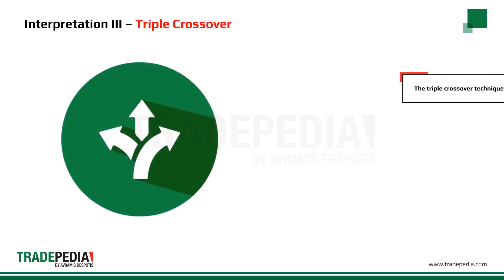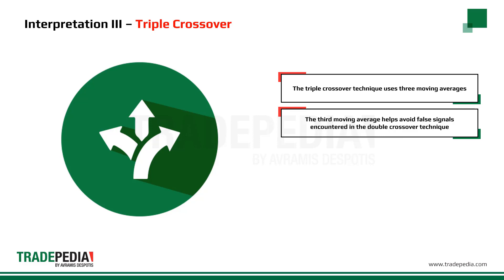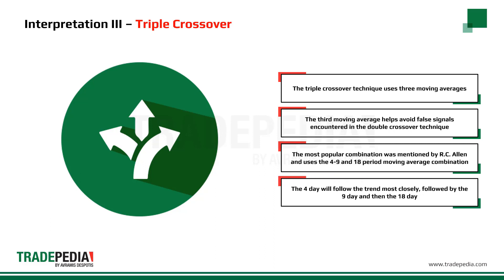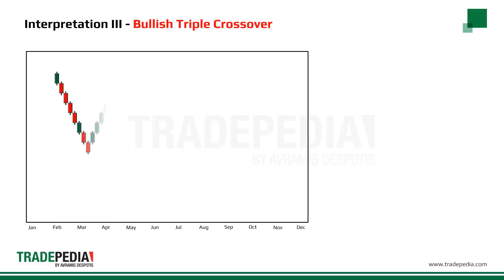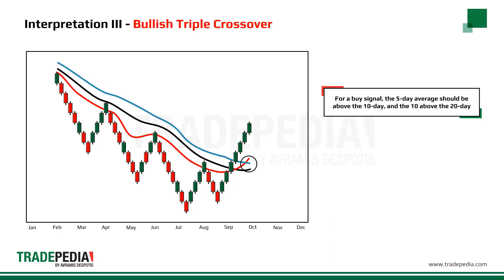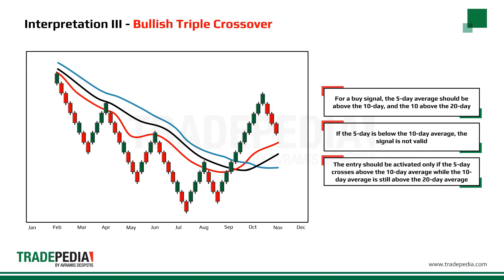Another way of interpreting moving averages is through the triple crossover technique, which uses three moving averages. The third moving average helps avoid false signals encountered in the double crossover technique. The most popular combination was mentioned by R.C. Allen and uses the 4, 9, and 18-period moving averages — some traders adjust it to 5, 10, and 20. For a buy signal, the 5-day average should be above the 10-day and the 10-day above the 20-day. If the 10-day has just given a buy signal by crossing above the 20-day but the 5-day is below the 10-day, the signal is not valid. The entry is activated only if the 5-day crosses above the 10-day while the 10-day is still above the 20-day.